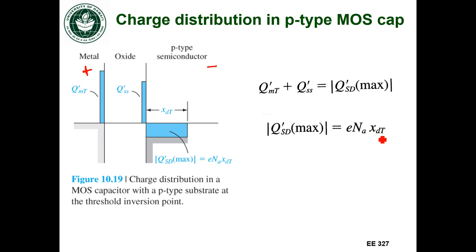And because we're at threshold, the point between depletion and inversion, that's the maximum depletion region width that I'm going to get. So it's the maximum amount of charge that I'm going to store in the depletion region.